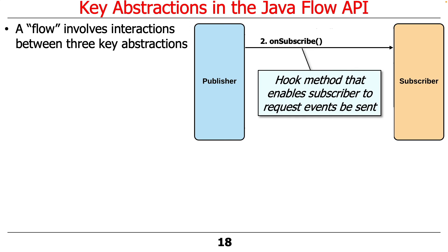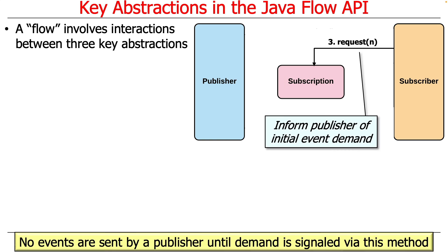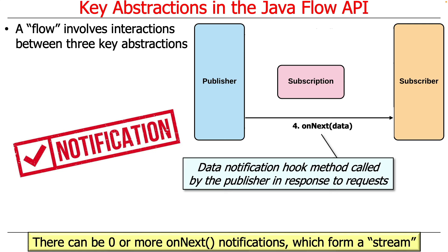Once you subscribe, the publisher calls back to the subscriber via onSubscribe, notifying it that it's been subscribed. The subscriber then responds with its subscription request — the number of items the publisher can send before needing to wait. You can pass a value indicating 'keep sending until you run out,' which means no flow control, or pass a specific number to enable flow control. No events are sent by the publisher until the subscriber signals demand by calling the request method on the subscription.